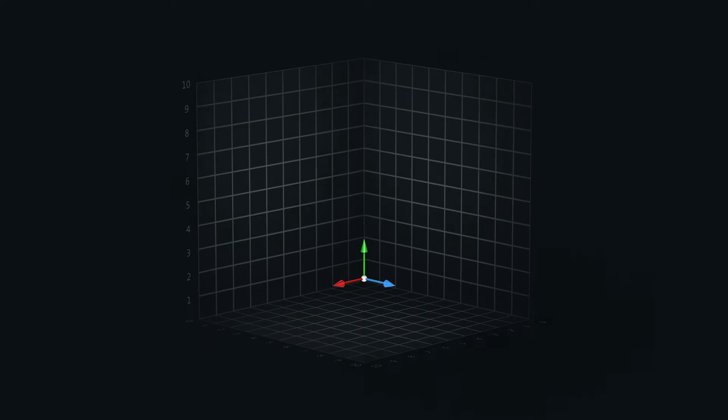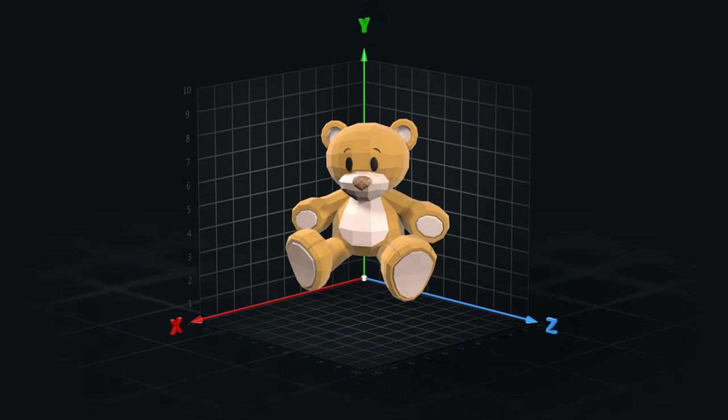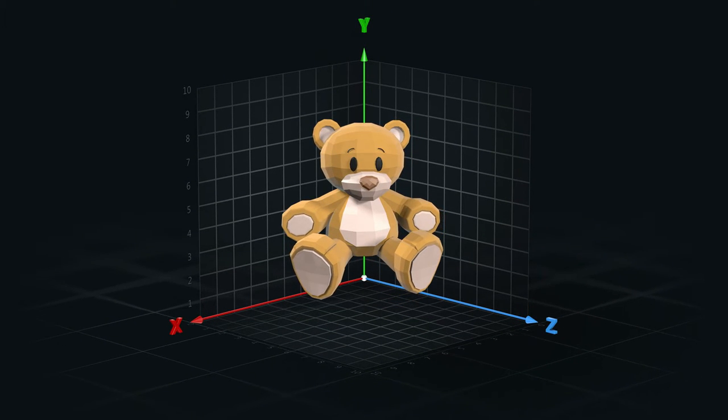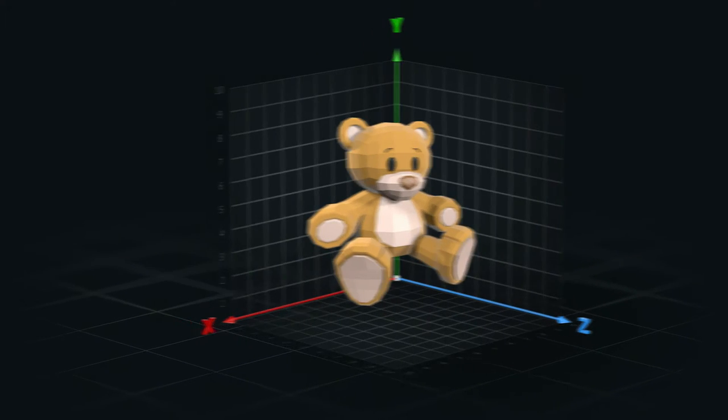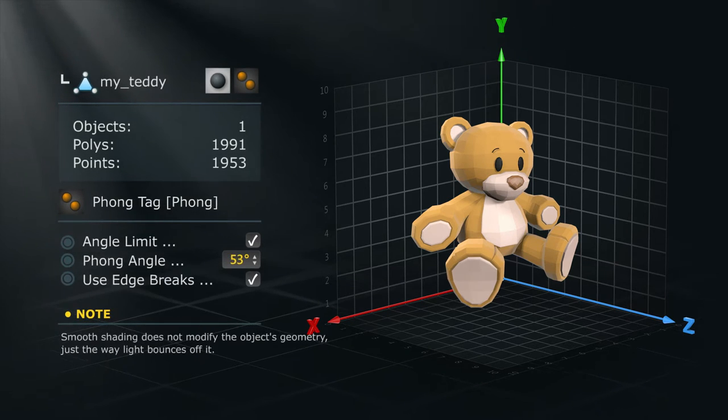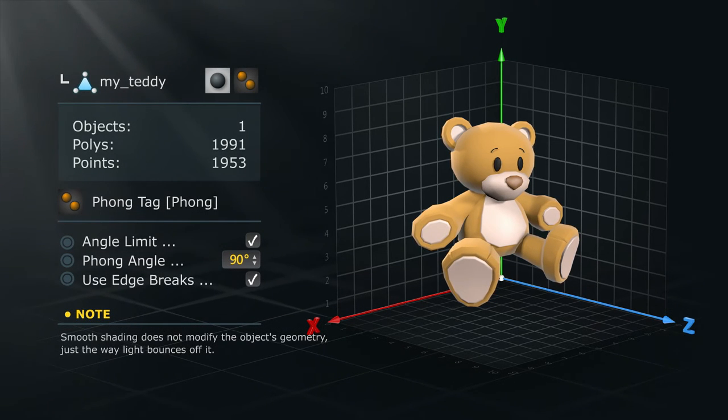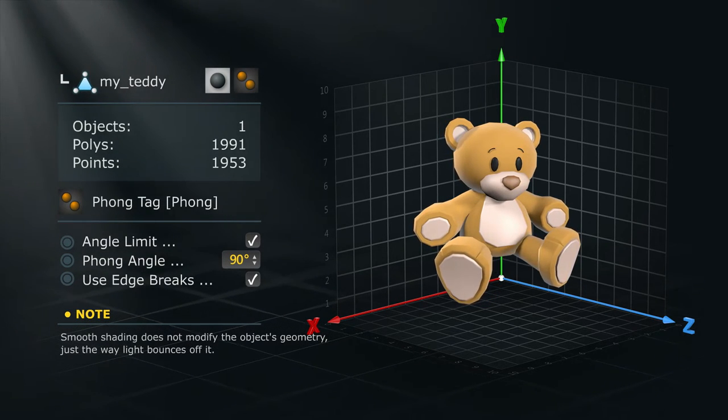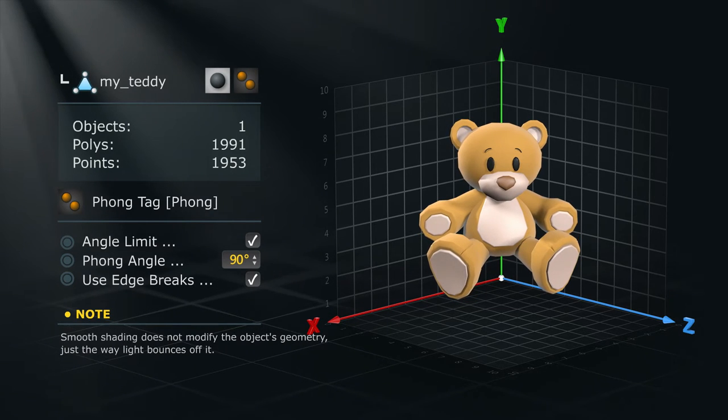As mentioned in the previous lesson, some low-poly models can benefit from a shading technique that removes faceting and smooths out their surface. In Cinema 4D, this is called phong shading and it works by establishing the angle at which smoothing can occur. Let's take a closer look at how this works.